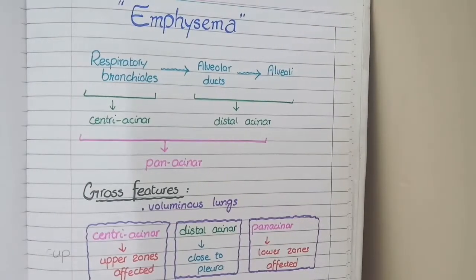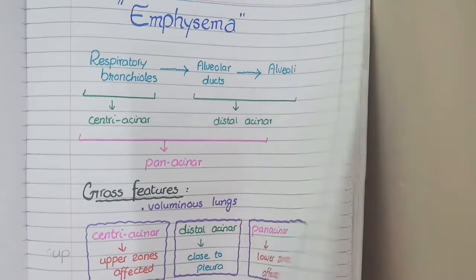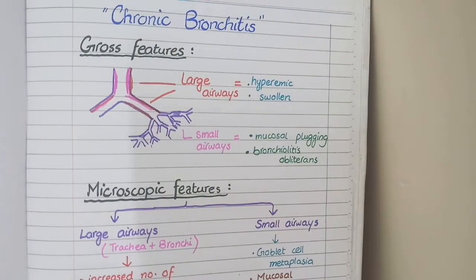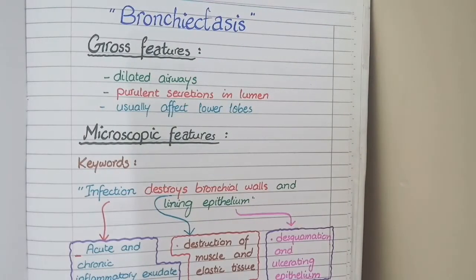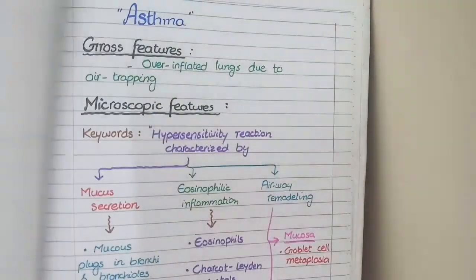In this video we will study the pathological features of obstructive lung diseases that include emphysema, chronic bronchitis, bronchiectasis and asthma.